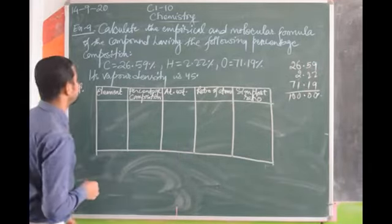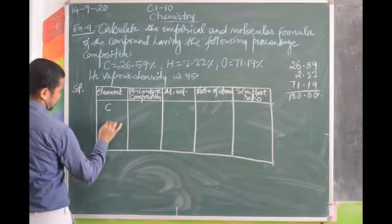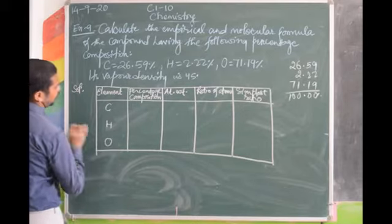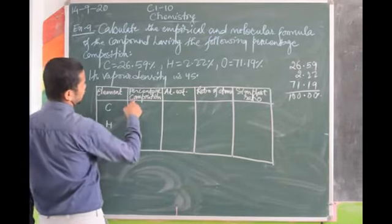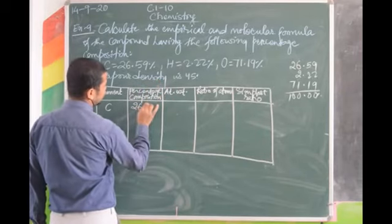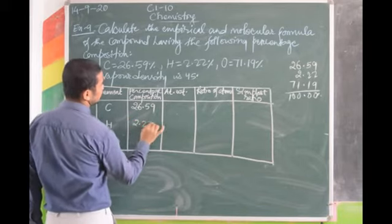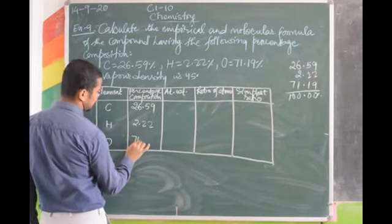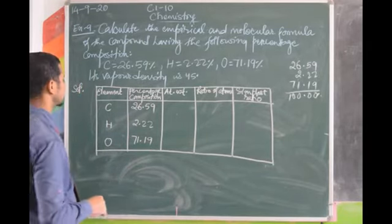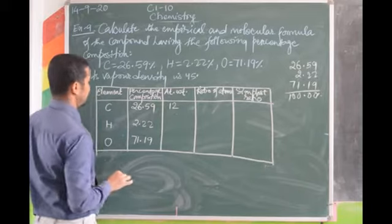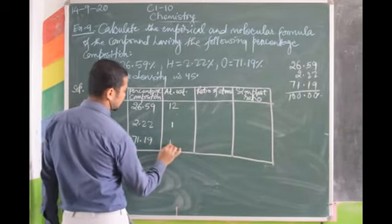Write the symbols of the elements: C, H, and O. Percentage of carbon is 26.59, hydrogen is 2.22 (or 2.23), and oxygen is 71.19. Atomic weight of carbon is 12, hydrogen is 1, and oxygen is 16.